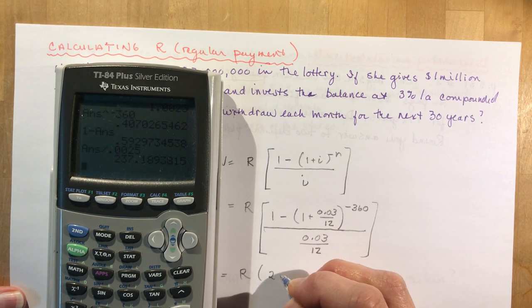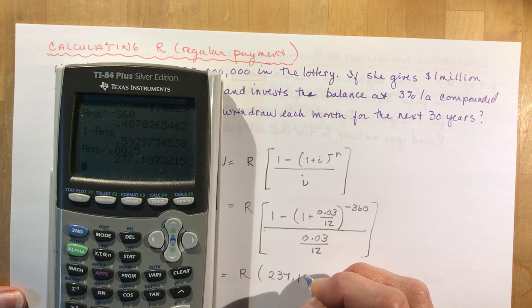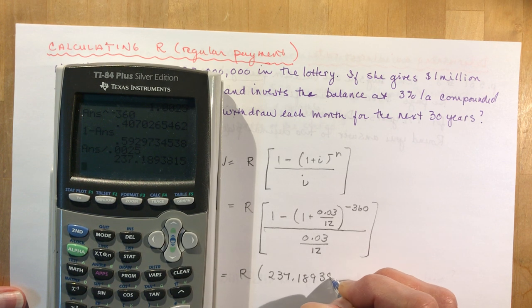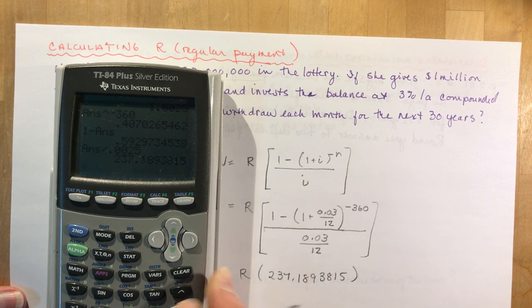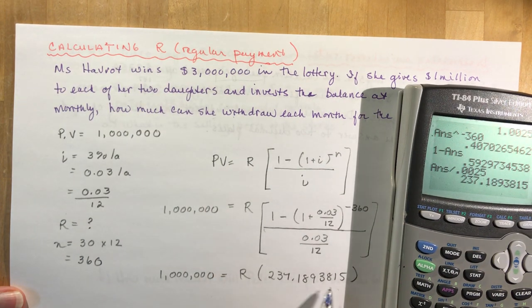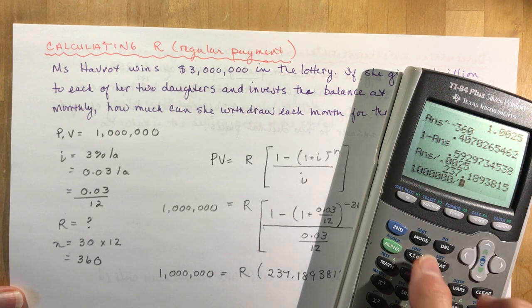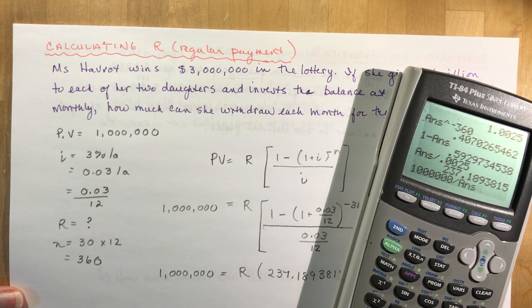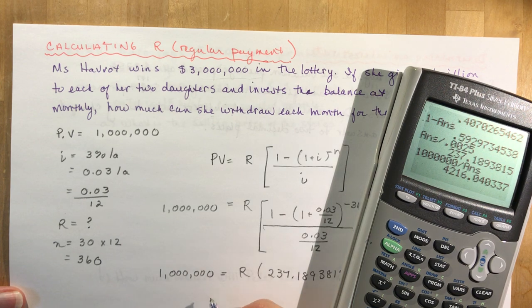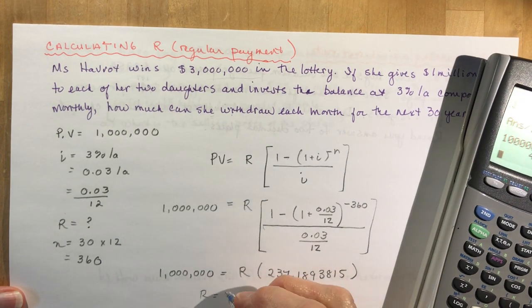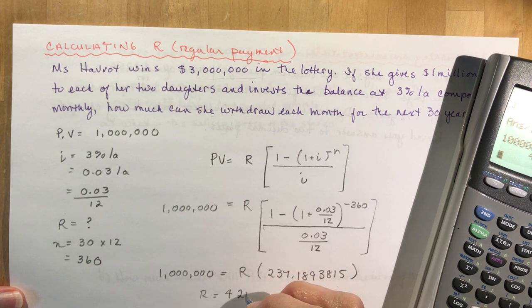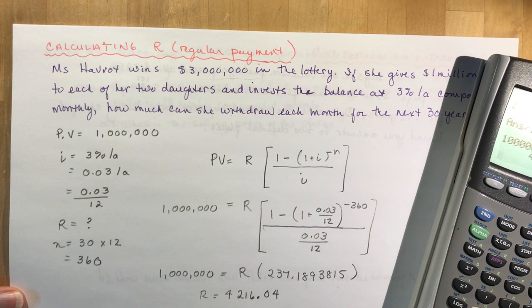If I want R, I'm going to divide both sides by that. So now I'm going to do 1,000,000 divided by my answer. And bingo, I get R is equal to $4,216. $4,216.04, 4,216 and 4 cents.